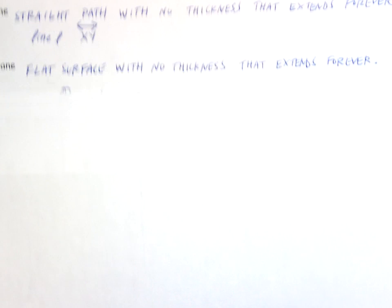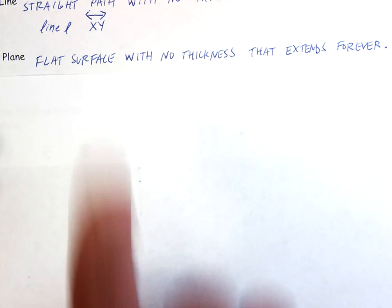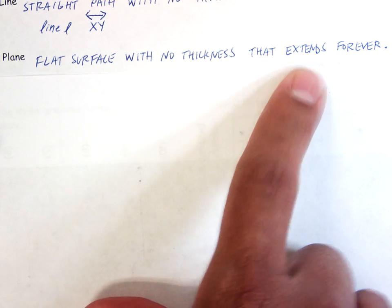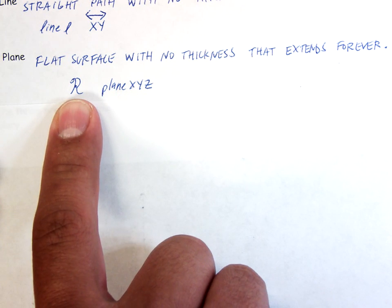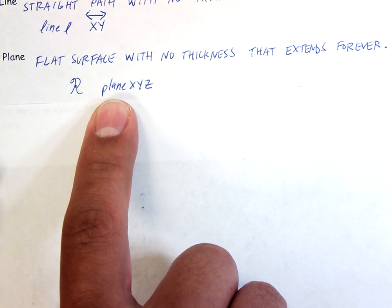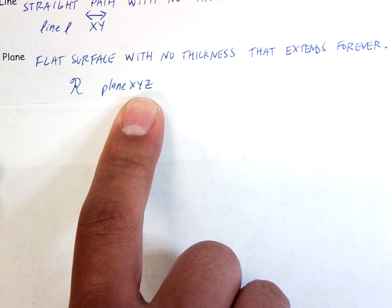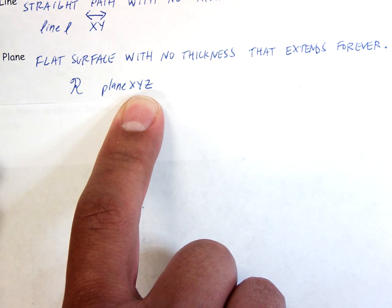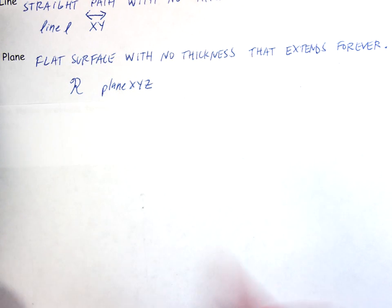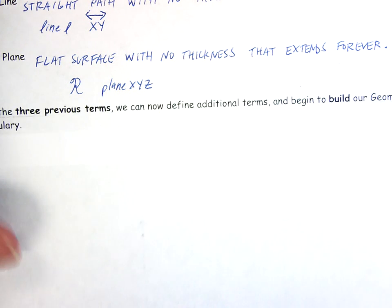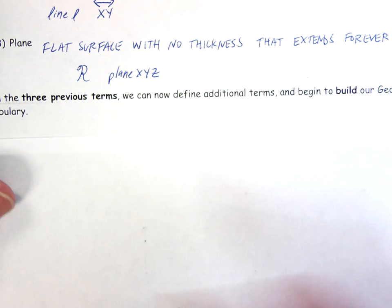Alright, a plane. A plane is a flat surface with no thickness that again extends forever in all directions. And we either name it with a capital cursive letter or we use the word plane and we just use three points that lie on that plane. Again, I'm not expecting you guys to be experts but have an understanding next time I see you. From the three previous terms we can now define everything else.